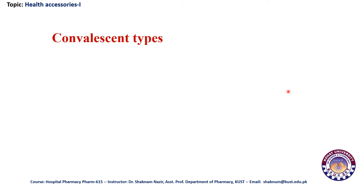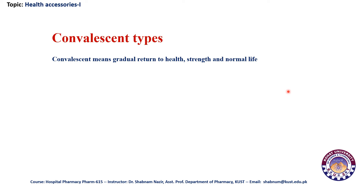It is important to mention that though convalescent types, ambulatory aids, and bedridden aids can be considered as separate classes, sometimes according to other classifications the bedridden aids and ambulatory aids are considered part of convalescent types. Convalescent means gradual return to health, strength, and normal life. So whatever is helping the patient during that time period is considered convalescent type. Bedridden and ambulatory aids are simply an extension of convalescent types and could be classified as part of the same class.